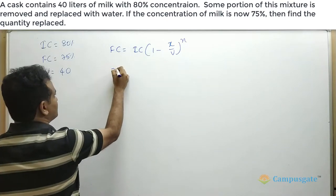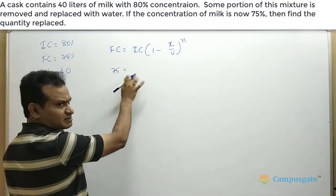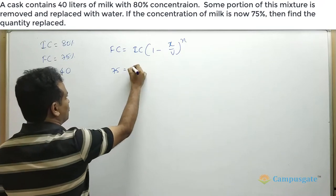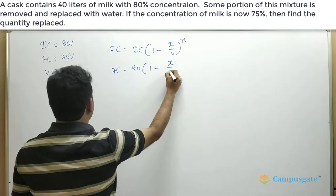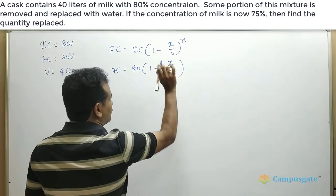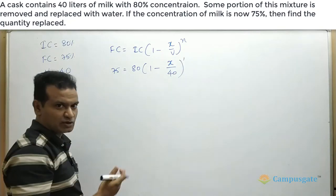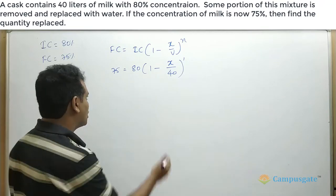Here final concentration is 75 percent. I am removing this percentage signs because on both sides they will get cancelled out. So 1 minus x liters whole divided by 40. This is the volume. We are doing this operation only for one time. So you can keep 1 or you can omit it. Not a problem at all.